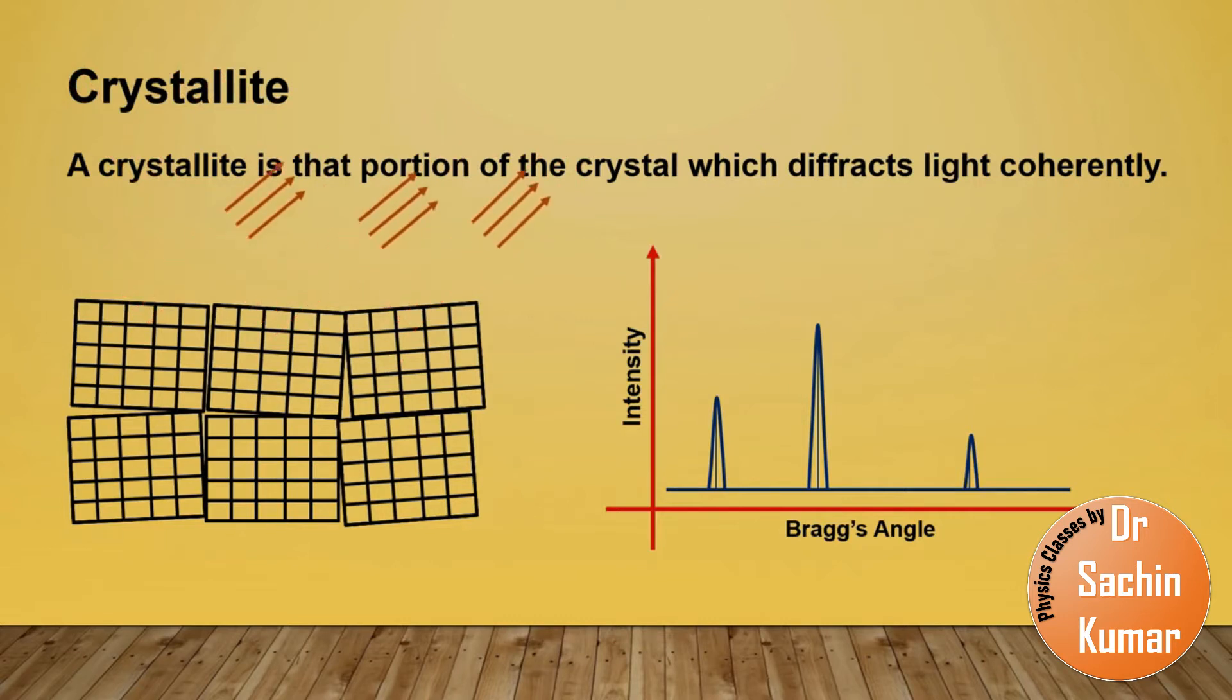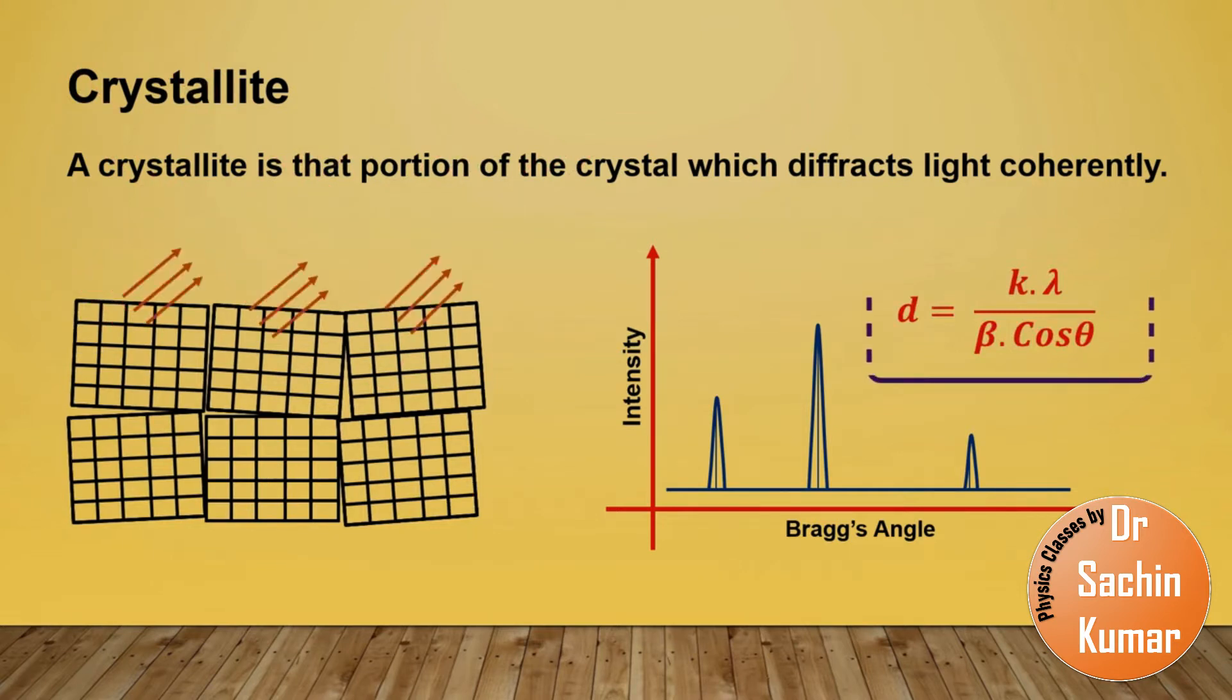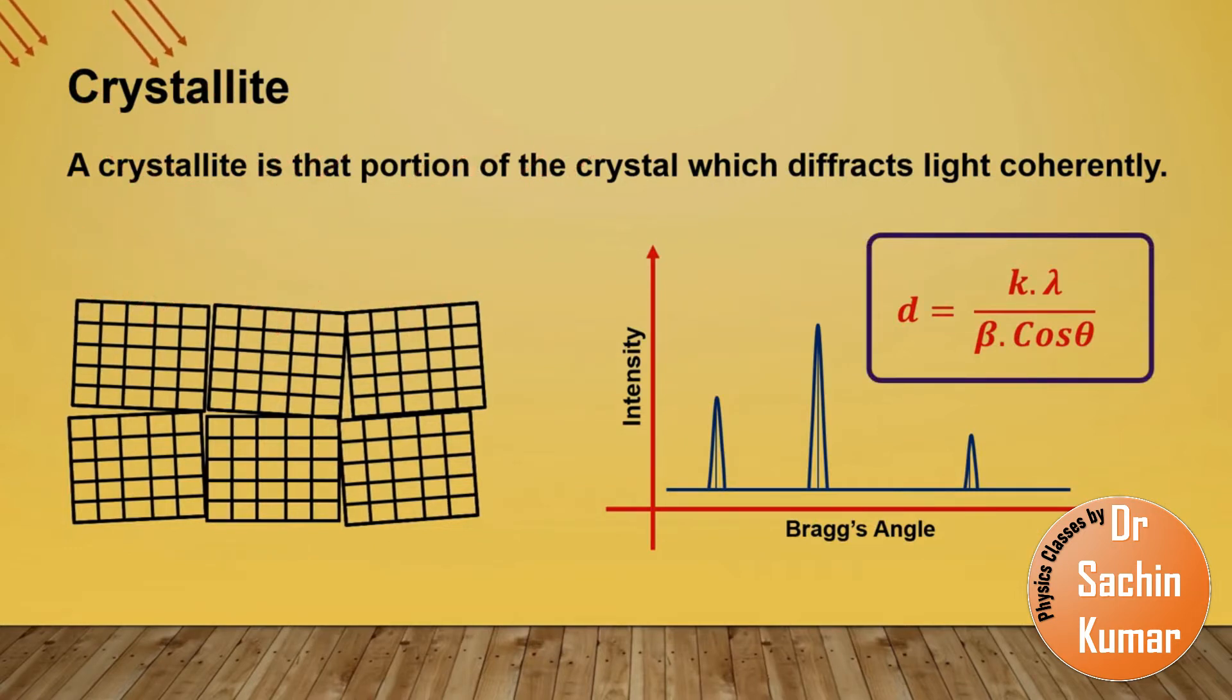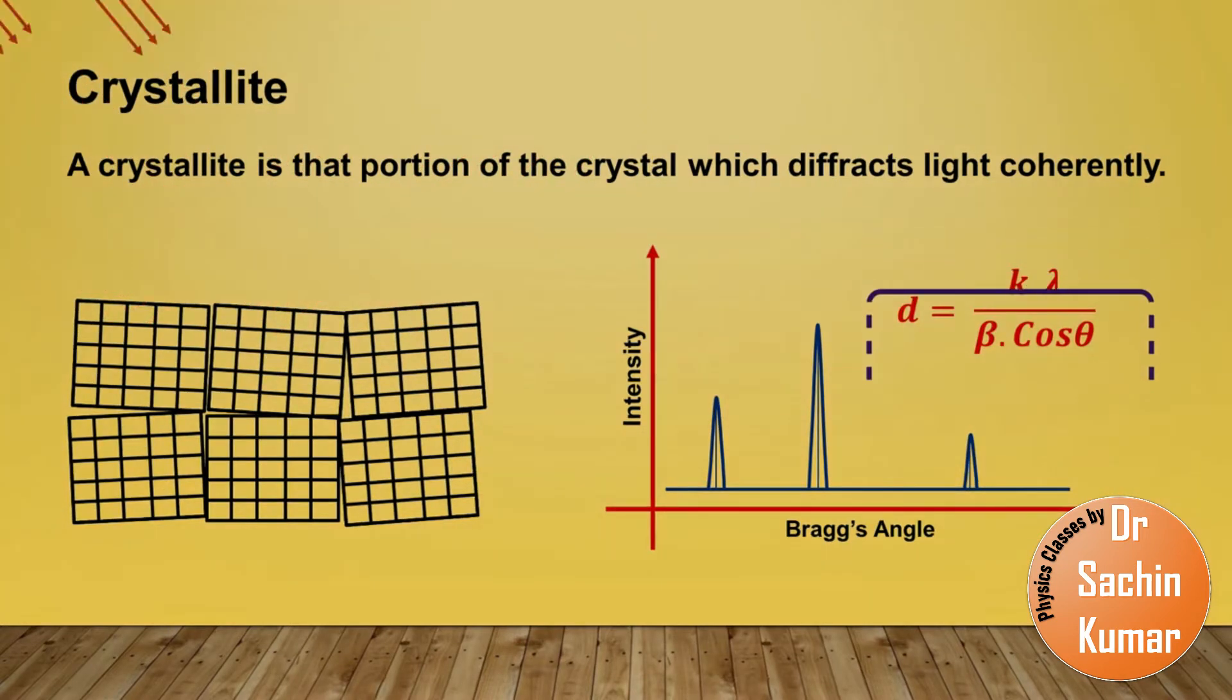The relation between the crystallite size and the full width half maxima of these peaks is known as Scherrer's formula. In this Scherrer formula, k is a constant, lambda is the wavelength of the x-ray radiation, theta is the angle of incidence of the x-ray radiation, and beta is the FWHM of this peak. As you can observe in this formula, the crystallite size and the FWHM are inversely proportional. As the crystallite size decreases, the width of the peak FWHM increases and you will observe broader peaks in your XRD pattern.